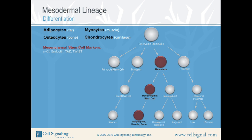Mesenchymal stem cells can be identified with antibodies directed against CKIT, endoglin, TAS, or TWIST. Adipocyte markers include adiponectin, CEBP-alpha, CEBP-beta, PPAR-gamma, GLUT4, and FABP-4. Myocytes can be identified with antibodies directed against desmin, myosin light chain, and troponin.